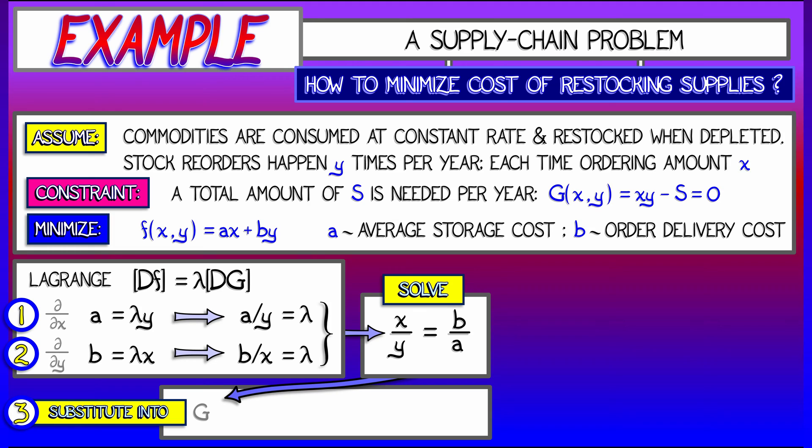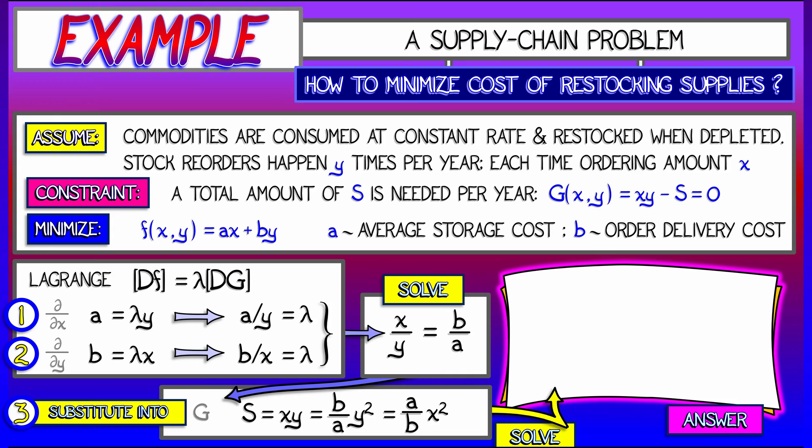That still doesn't give us actual numbers. For that, we need to plug it into the constraint equation, saying that s is equal to x times y. Given what we derived earlier, we can easily substitute in for that value of x. x equals b over a times y. We get an equation we can solve and get that x is the square root of b times s over a.